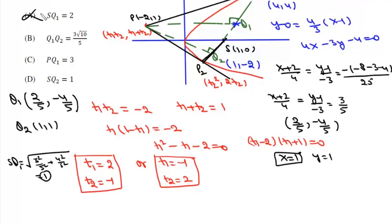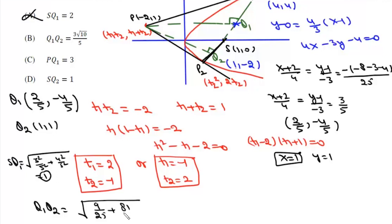Now we find Q1Q2. Q1Q2 equals the square root of (1 minus 2/5) squared plus (1 minus (minus 4/5)) squared, which is (3/5) squared plus (9/5) squared, giving 9/25 plus 81/25 equals 90/25, so Q1Q2 equals 3 root 10 divided by 5. Option B is correct.